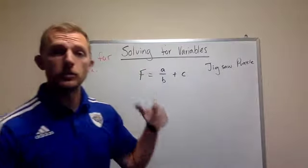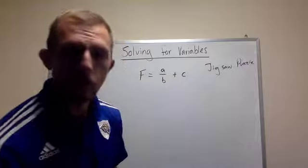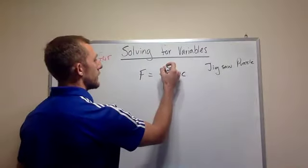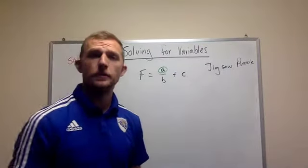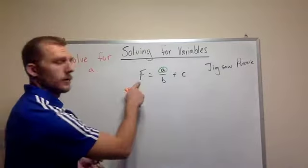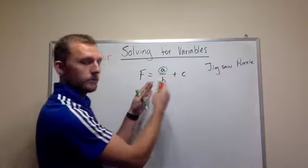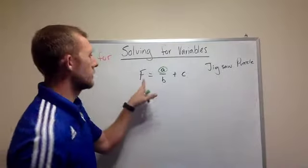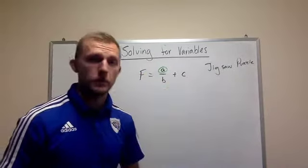So whenever we're solving for variables, we need to identify first what we're looking for. I'm going to start with this example here. Here we are trying to find A. I'm going to circle that. That's what we're trying to find. We're trying to get it on its own. Right now it's solved for F because it's on its own and it equals to this side of the equation. So F equals A divided by B plus C.